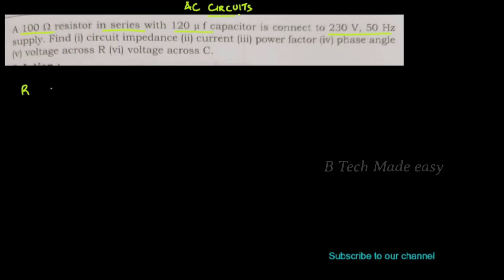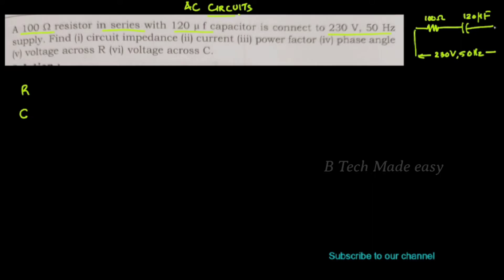There is a resistor and a capacitor — a 120 microfarad capacitor connected in series. What we need to find for this circuit: total impedance, current, power factor, phase angle, and the voltage across the resistor and capacitor.